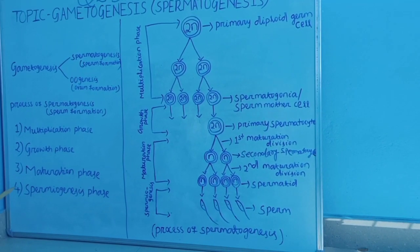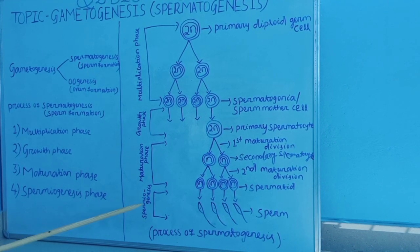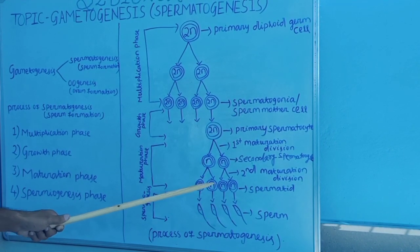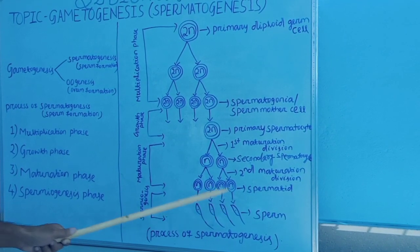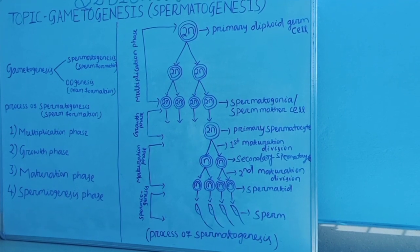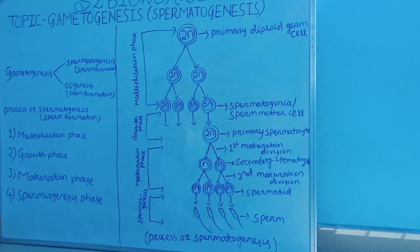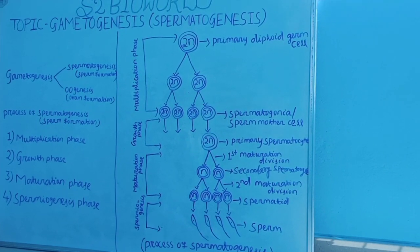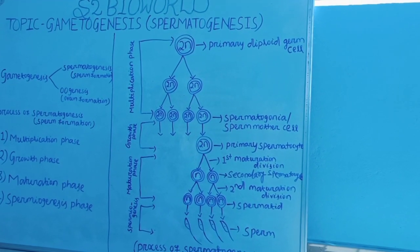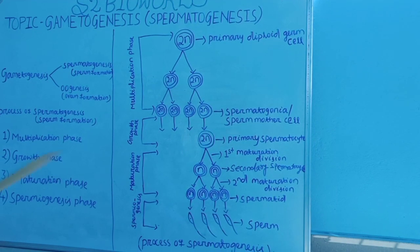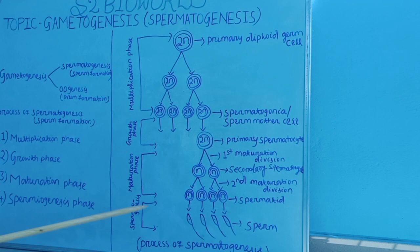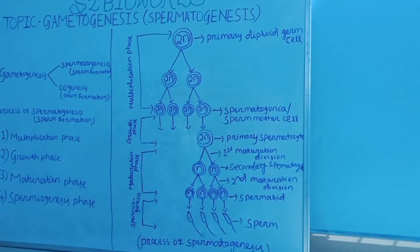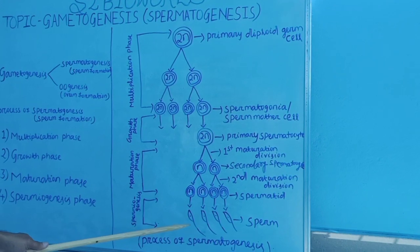After the completion of the maturation phase, the last phase — Spermiogenesis — arises. In this phase, the rounded stationary spermatids are converted into elongated motile sperm. During Spermiogenesis, the following changes appear: the large spherical nucleus becomes smaller by losing water; the Golgi bodies condense into a cap-like structure called the Acrosome; and the sperm consists of four parts — head, neck, middle piece, and tail.